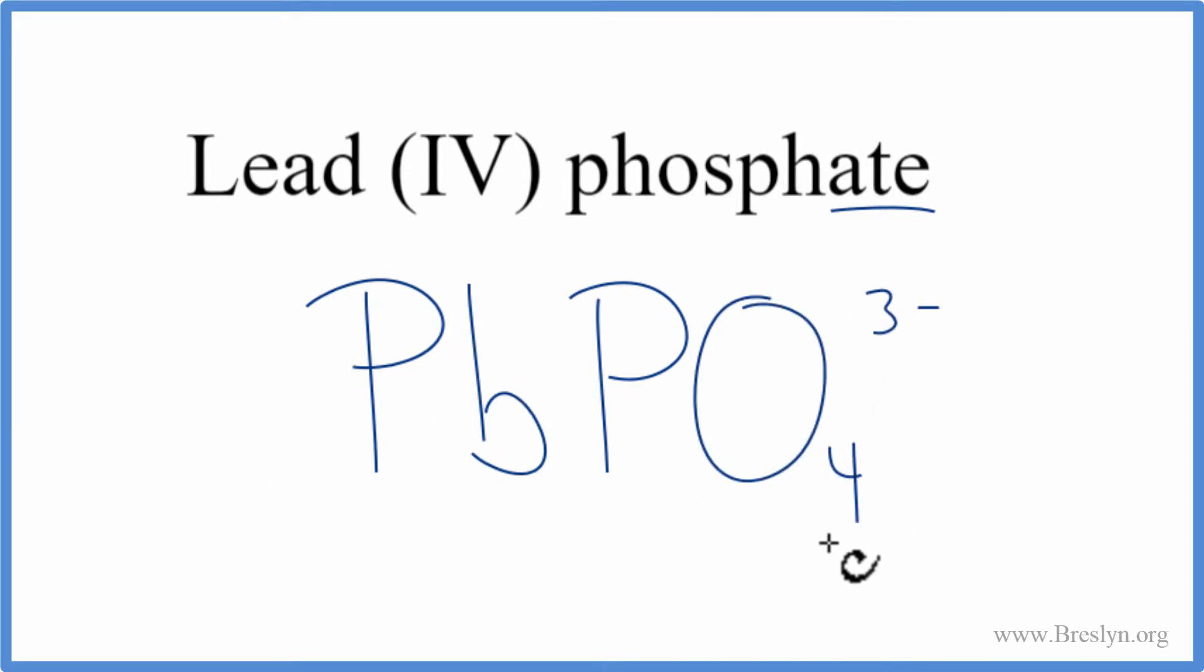Lead's a metal, phosphate is a non-metal, a group of non-metals. So when we have a metal and some non-metals, we have an ionic compound. We need to think about the charge on the lead and then the phosphate. Lead, it tells us right here, that has an ionic charge of four plus. We know the phosphate is three minus.